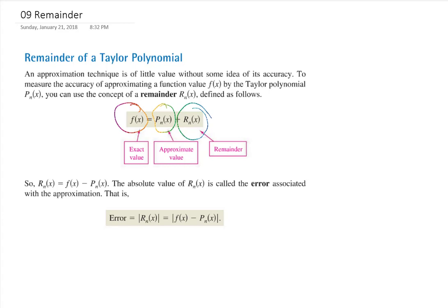If we knew the exact remainder and exact polynomial, it would be easy. Oftentimes we're going to want to be calculating this remainder to determine what it actually is. We call the absolute value of that the error associated with it. When we talk about the error, we're talking about the exact function value minus the polynomial function value.